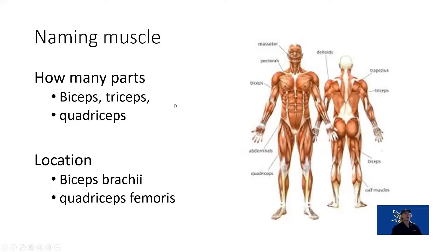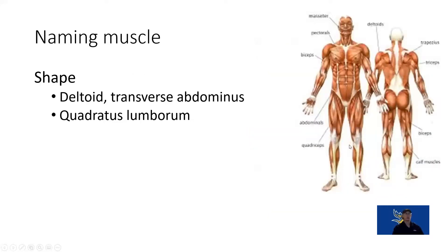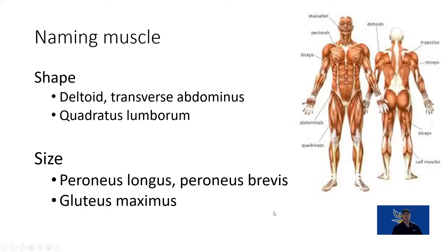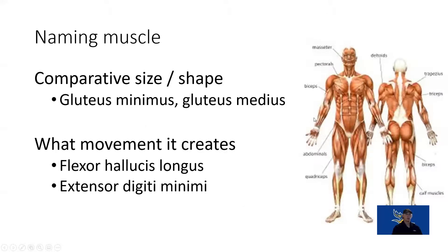When we name our muscles, they may be named by how many parts or the location. Sometimes by shape — quadratus means a square shape, deltoid is a triangle shape. Or by size — longus is a longer muscle, brevis is shorter; maximus to minimus comparing size. Sometimes the movement indicates the name: flexor hallucis longus is a long muscle that flexes the hallucis or great toe, and extensor digiti minimi extends the small fifth digit.